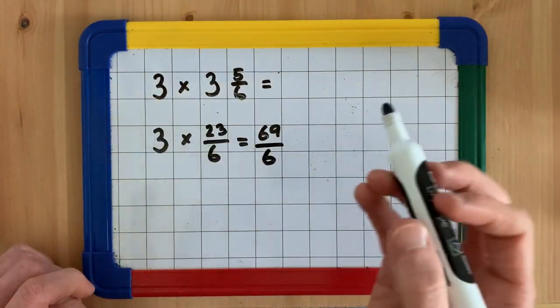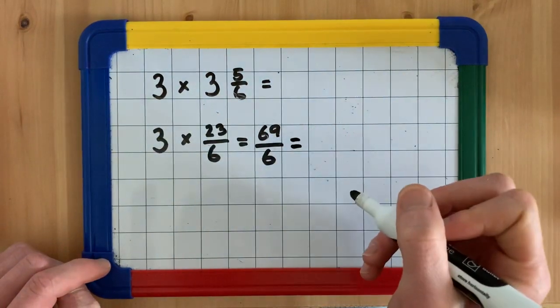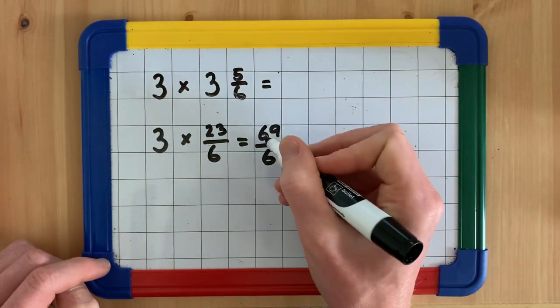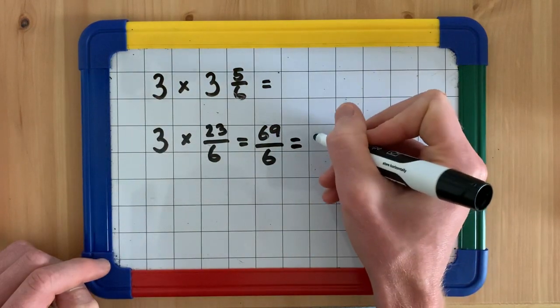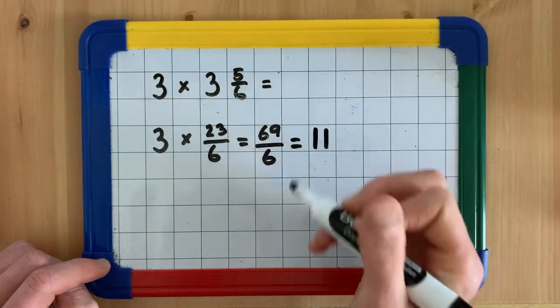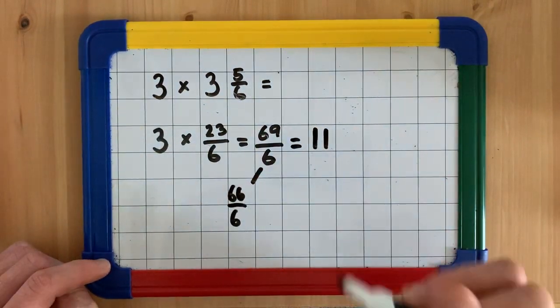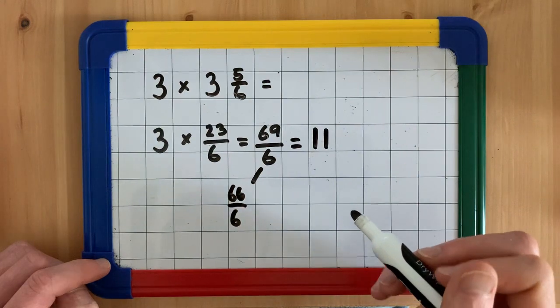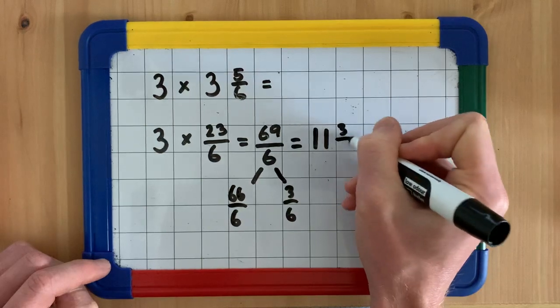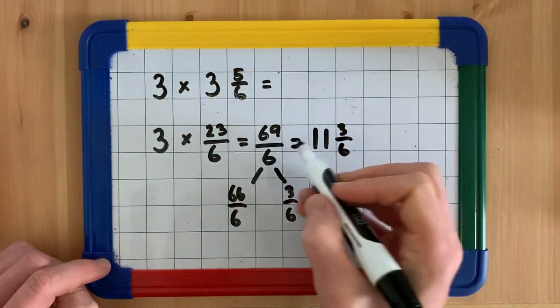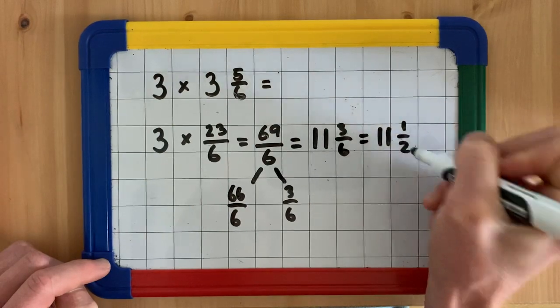Now, we need to convert this improper fraction back to a mixed number. I know that there are 11 sixes in 69. So that's saying there are 66 sixths make 11 wholes. And then we'd have 3 sixths remaining. So 11 and 3 sixths, which is 11 and a half.